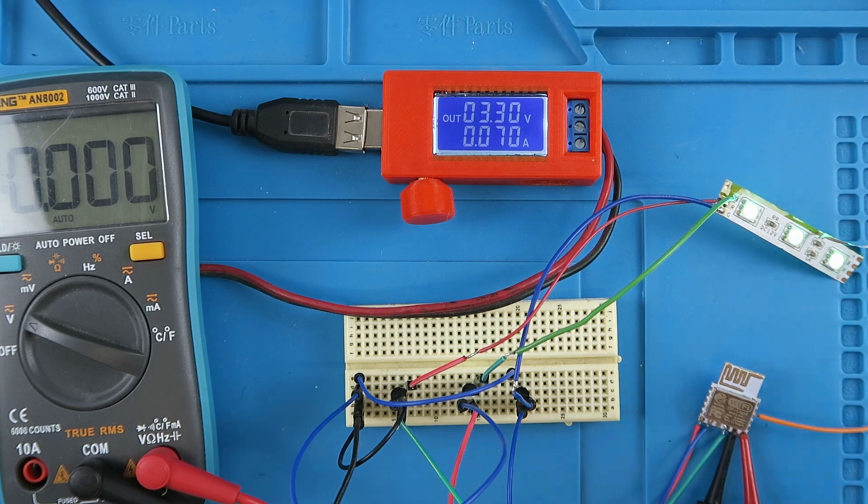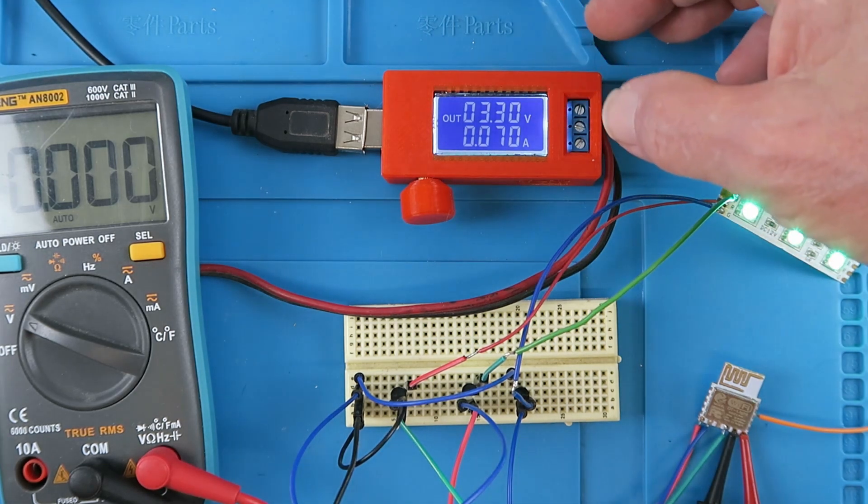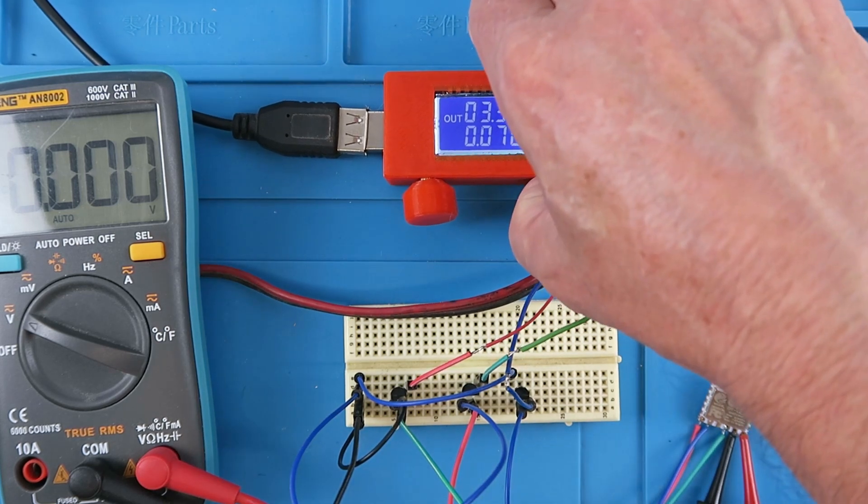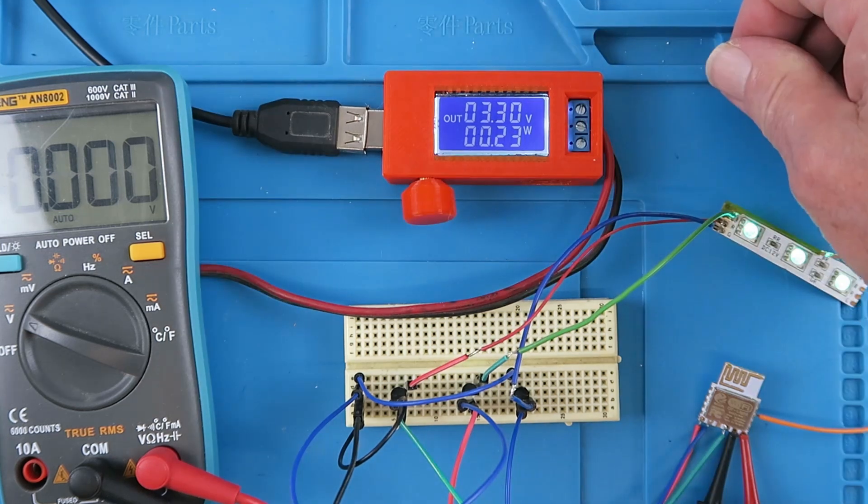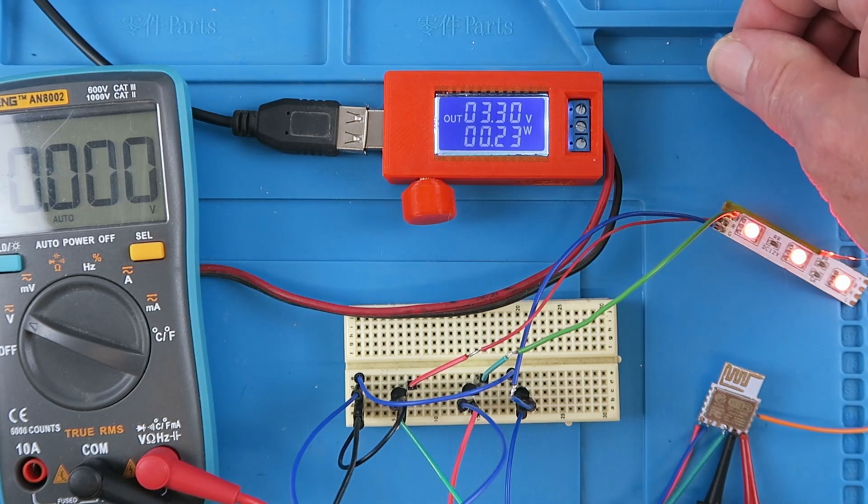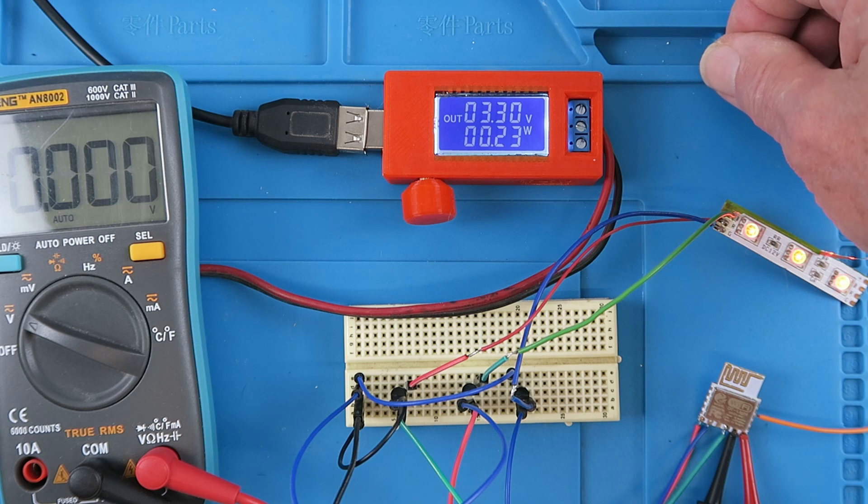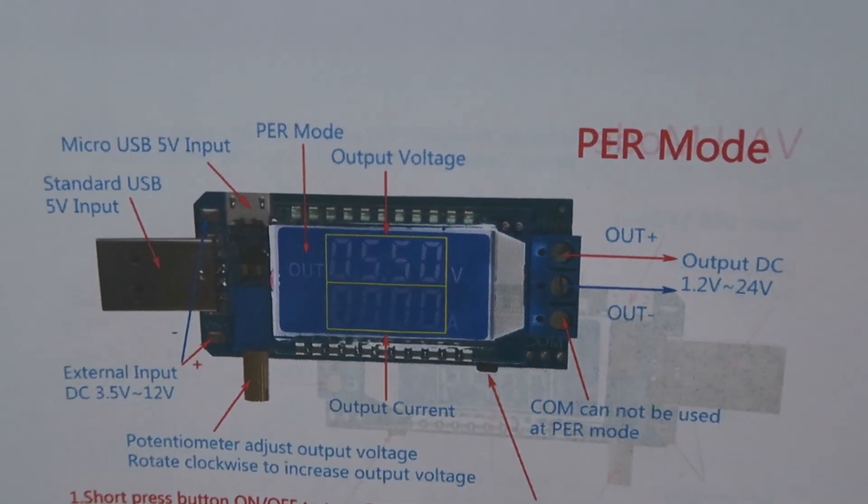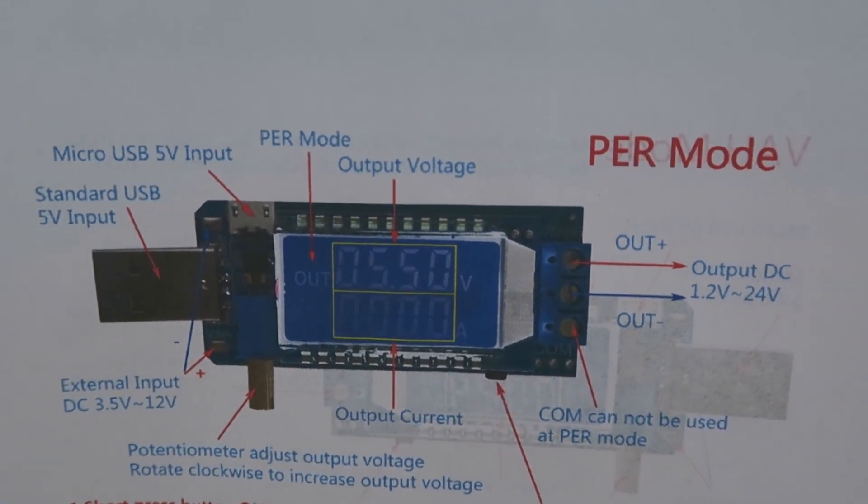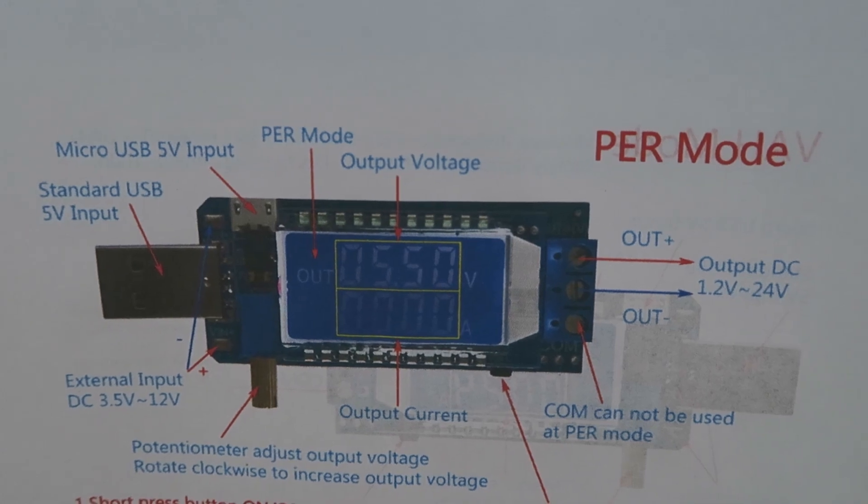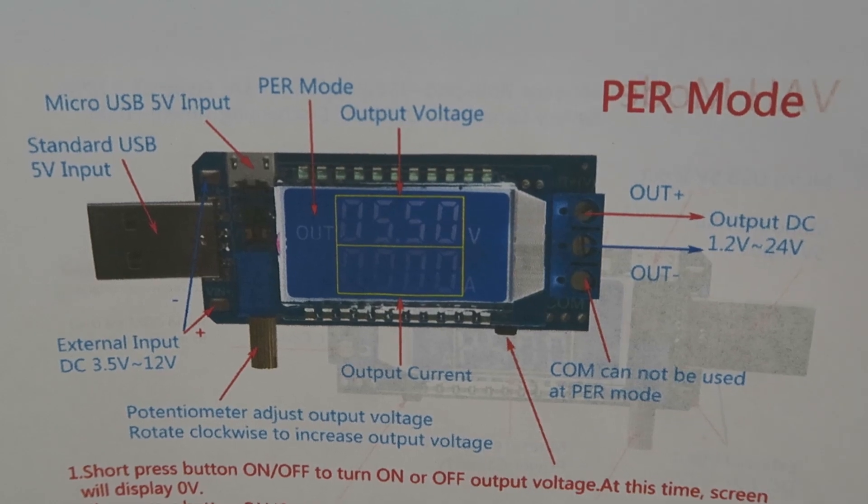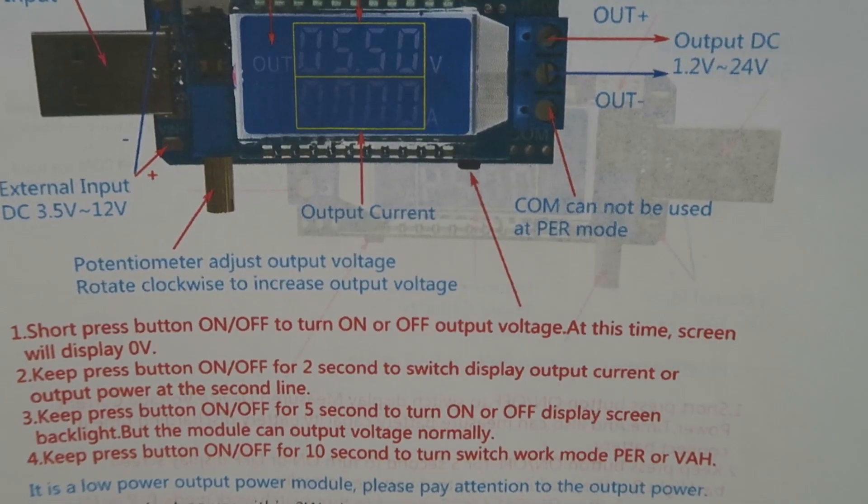We can see the current there, 0.07 amps. We press and hold the on-off button, we can get it into its wattage mode. There it tells us 0.23 watts. I found some better data sheets and I'll put a link in the description where you can download a PDF of these drawings, and it explains all of the things that I've already gone through.